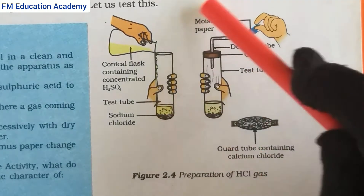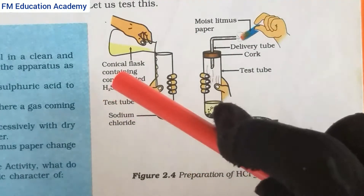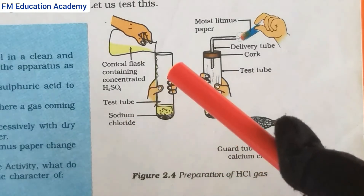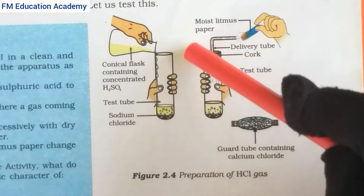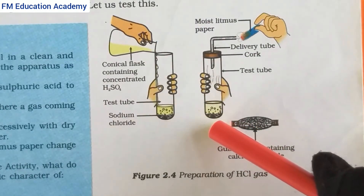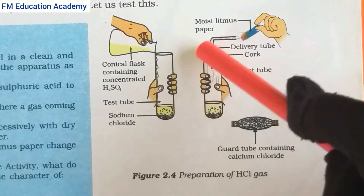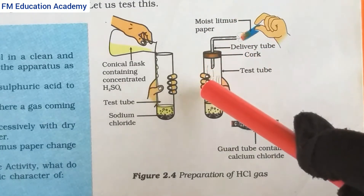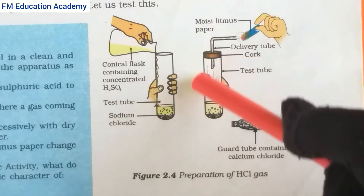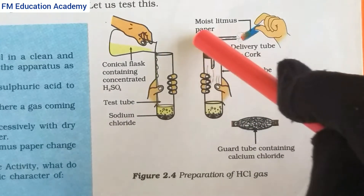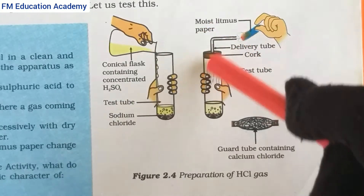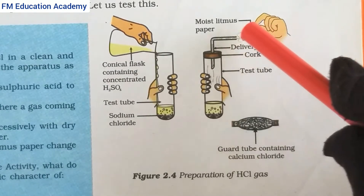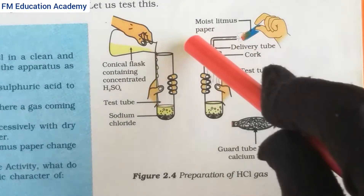First, we take sodium chloride in a test tube and then we add dilute sulfuric acid from a conical flask slowly on top of the sodium chloride. Then we close this test tube with a cork, make a hole in the cork, and place a delivery tube through it because the acid is very corrosive. We first take a dry blue litmus paper and bring it near the test tube.